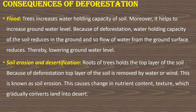Flood: trees increase the water-holding capacity of soil and help increase groundwater levels. Because of deforestation, the water-holding capacity of the soil reduces, so the flow of water from the ground surface reduces, thereby lowering groundwater levels. Soil erosion and desertification: roots of trees hold the top layer of soil. Because of deforestation, the top layer of soil is removed by water or wind — this is known as soil erosion. This causes changes in nutrient content and texture, which gradually converts land into desert.